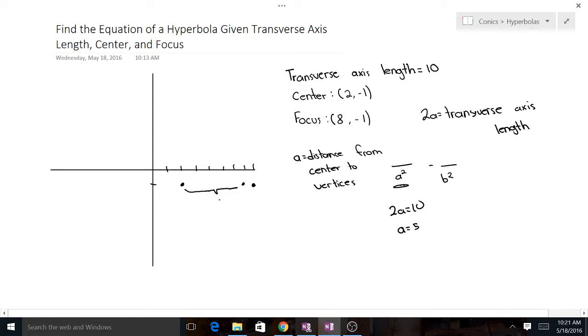What we have is we have a right here, then we have the distance from the center to the foci is c. We can find b, because we know c squared equals a squared plus b squared. So b equals the square root of 11.